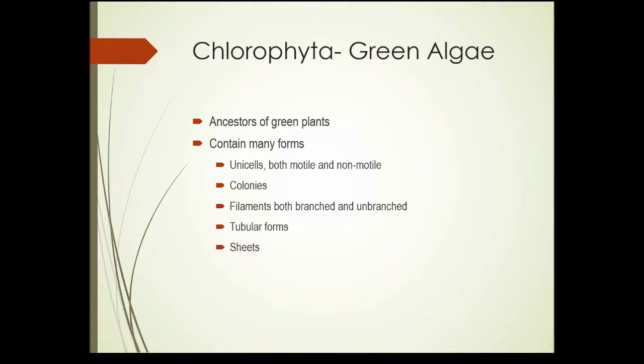Unit 14, section 3. In this section we'll take a look at the red, green, and brown algaes. First we'll look at the Chlorophyta division, which are the green algaes. Green algaes are the ancestors of all green plants. There are many forms of green algae: unicellular, both modal and non-modal colonies, filaments both branched and unbranched, tubular forms, and sheets.